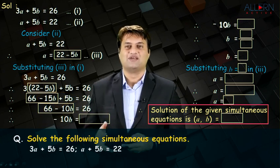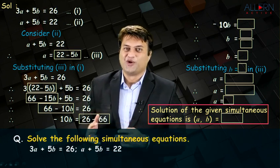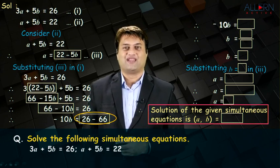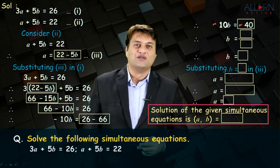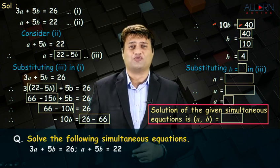Minus 10b is equal to 26 minus 66. 26 minus 66 is minus 40. So, you get minus 10b is equal to minus 40. Therefore, b is equal to 40 upon 10. B is equal to 4.